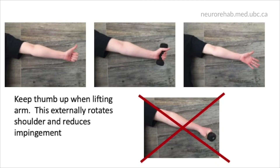If there is any shoulder pain, cue the participant to keep the shoulder in external rotation when raising the arm to minimize impingement. This can be done by keeping the thumb up, as seen in the top examples. The bottom shows the arm in neutral, and this should be corrected.